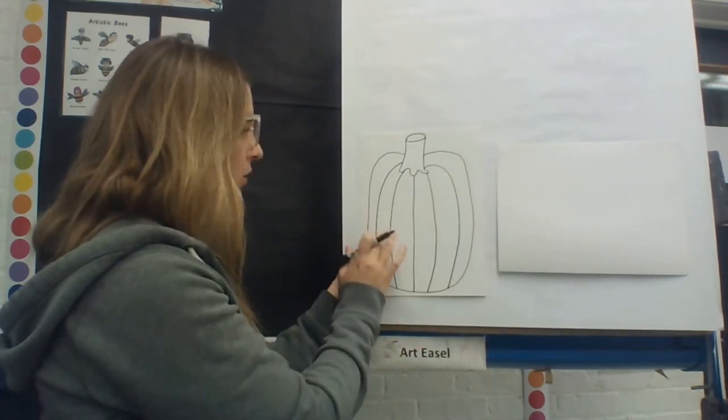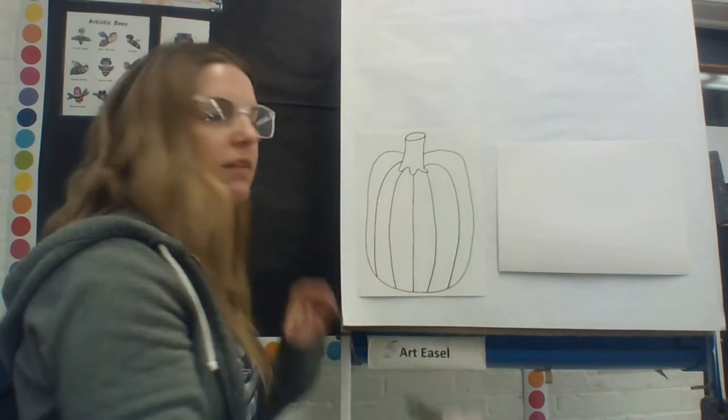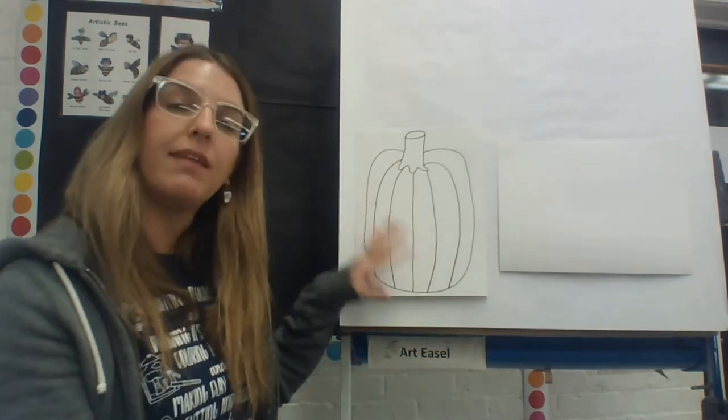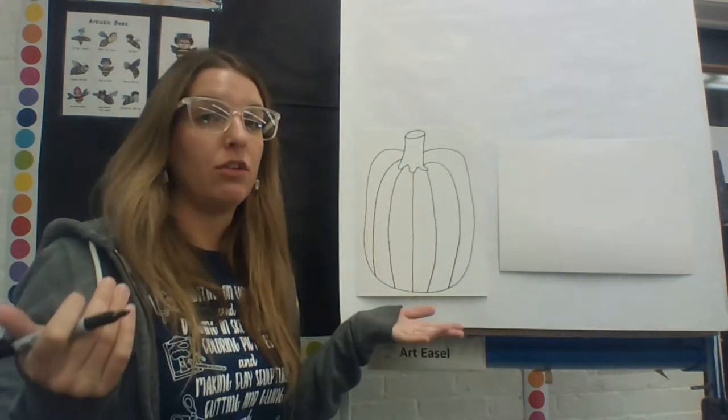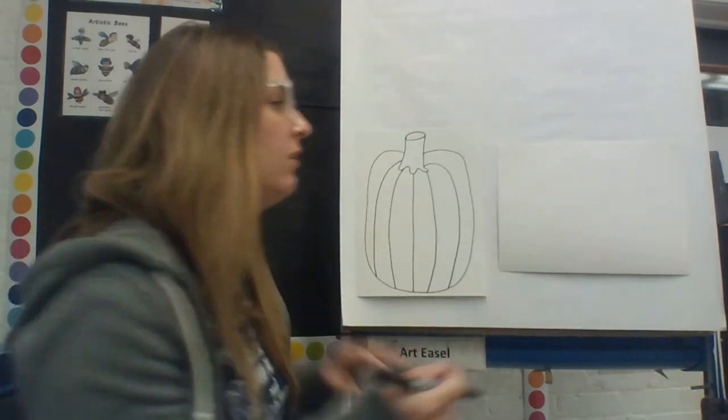So I have one, two, three, four, five, six spaces. This is pretty good. So that's separating your pumpkin into spaces. Let's do the same thing with a horizontal pumpkin.